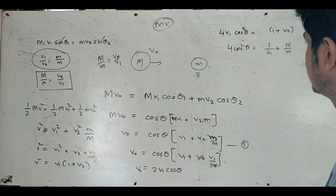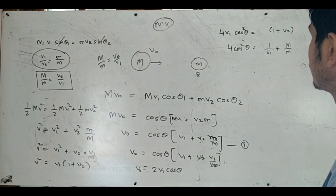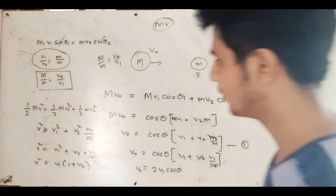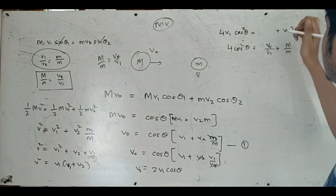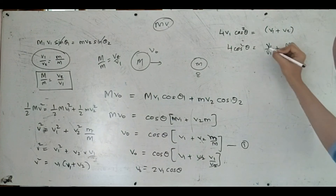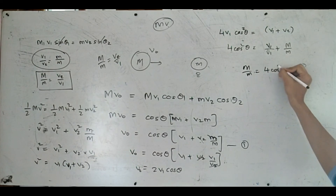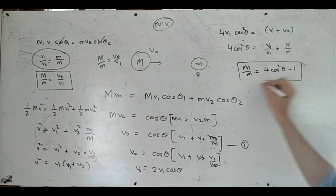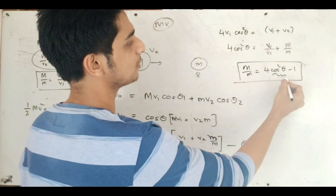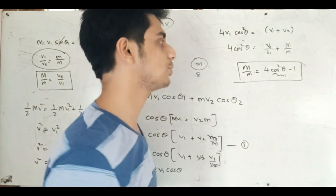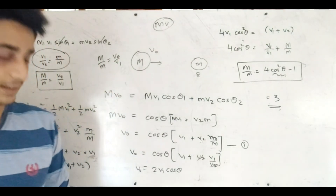Now working through the algebra: we have 1 plus (V2/V1) in terms of cosθ. The maximum value of (V2/V1) is 1, and the maximum value of cosine squared theta is 1, so 4 times 1 equals 1 plus 3. Therefore 4 minus 1 equals 3, and the answer is 3.